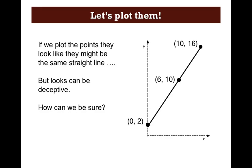So now we're going to actually plot these points. If we plot the points, they look like they might be the same straight line, but looks can be deceptive. How can we be sure? You have a coordinate plane on your paper, and what I want you to do is plot the points on that coordinate plane. You'll notice that it looks a lot like the picture on your screen. They could create a straight line. It's very possible. Go ahead and pause the video and plot your points.